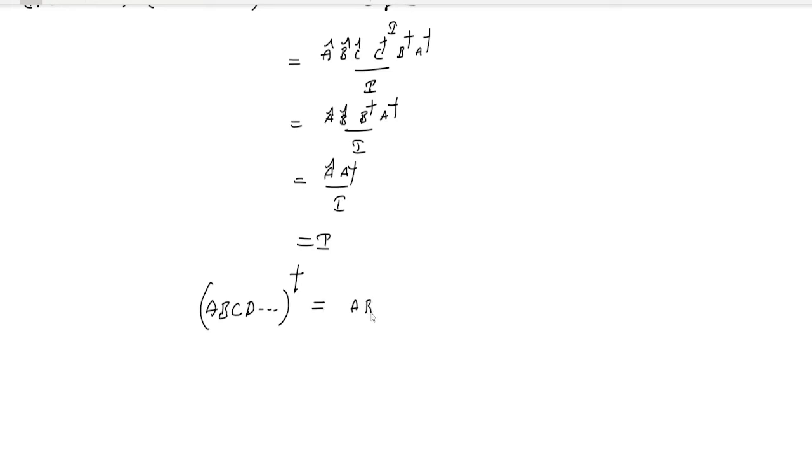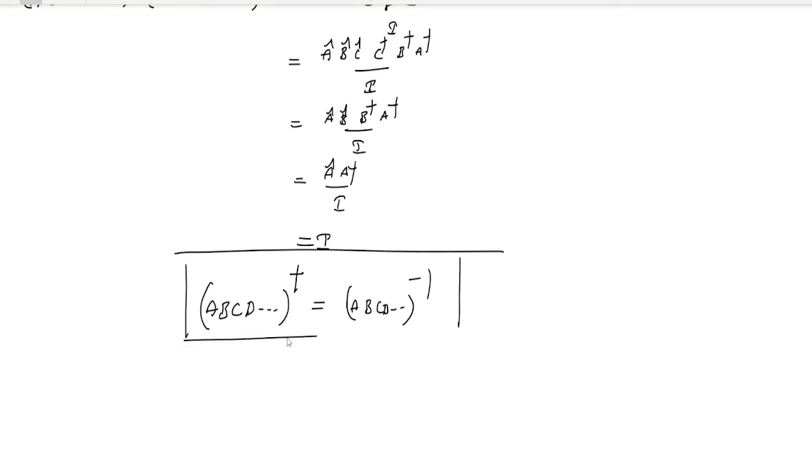We can write this equation: A, B, C, D and so on — by the unitary operator definition, the adjoint of the product of operators B, C, D and so on is their inverse. These are also unitary operators.